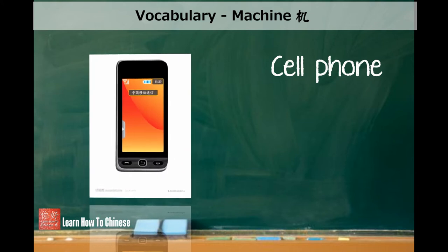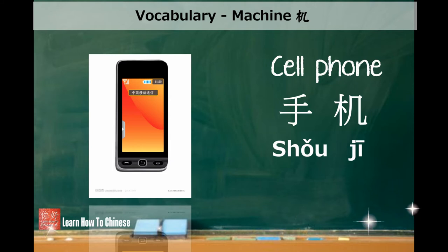Cell phone in Chinese is called shou ji. Shou means hand, and ji means machine. Together, you get the meaning hand machine, shou ji, which means cell phone. So yes, cell phone has the word machine in it.